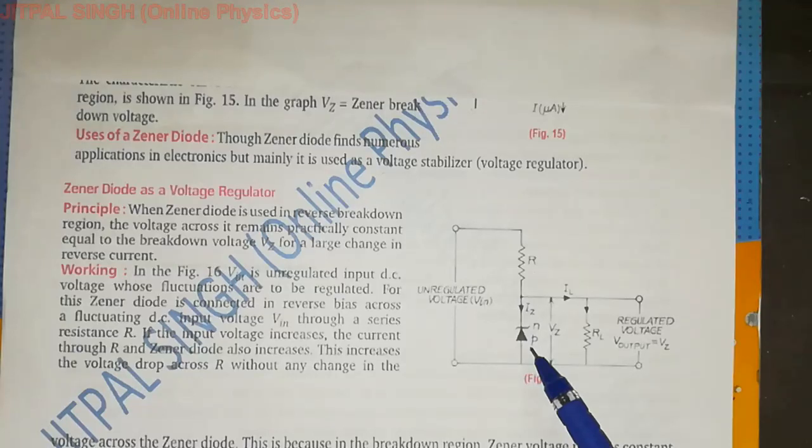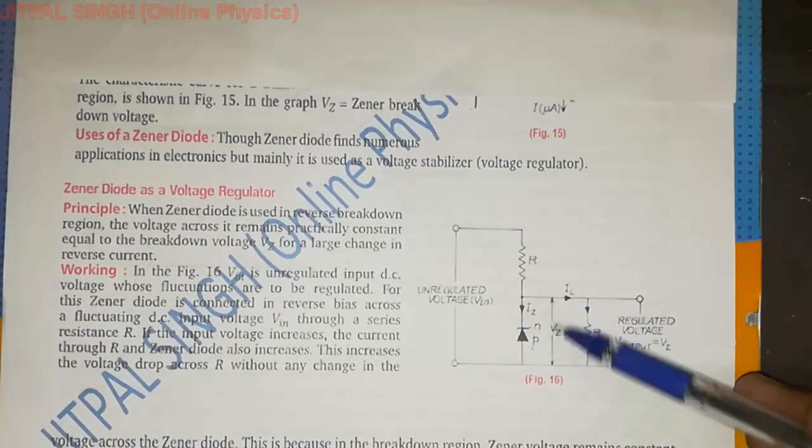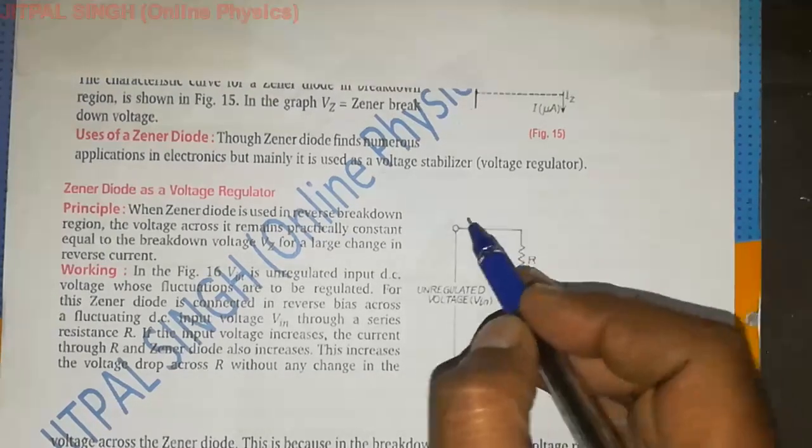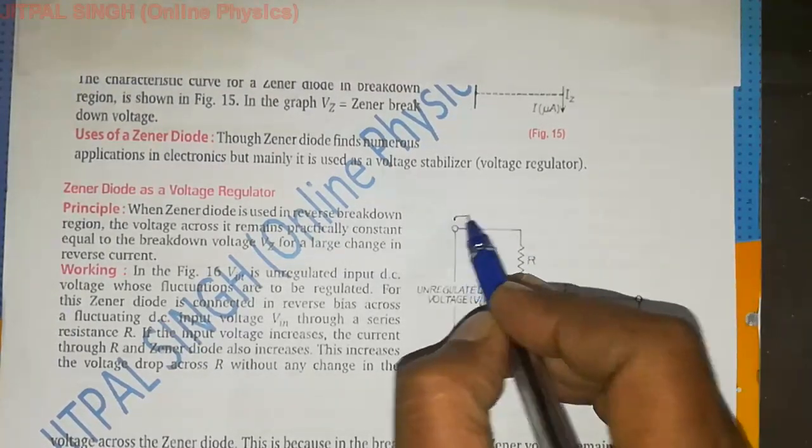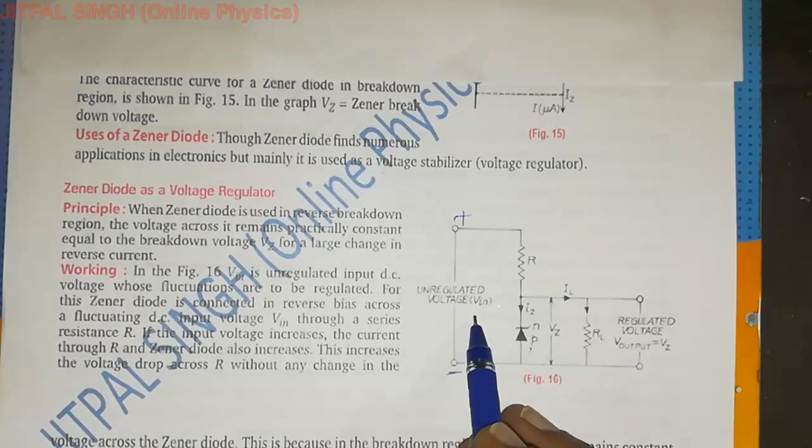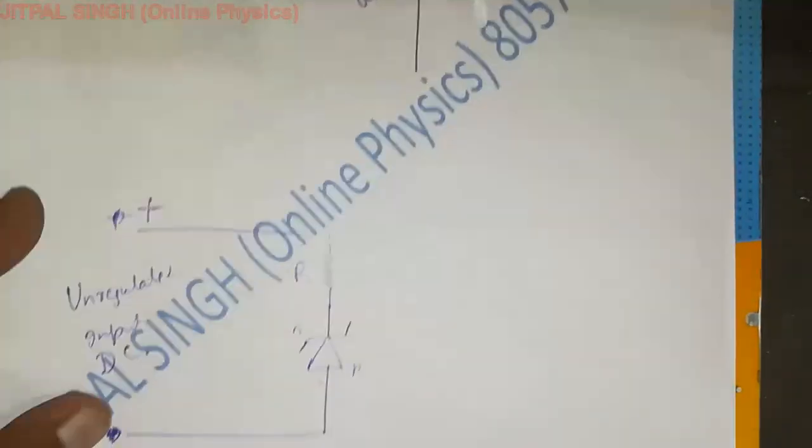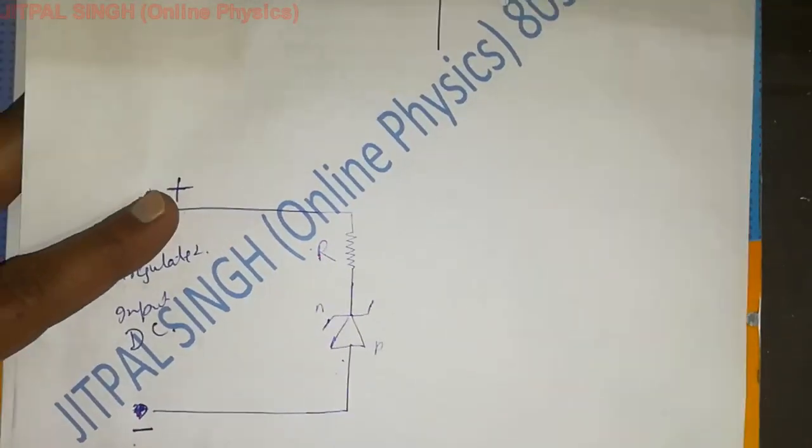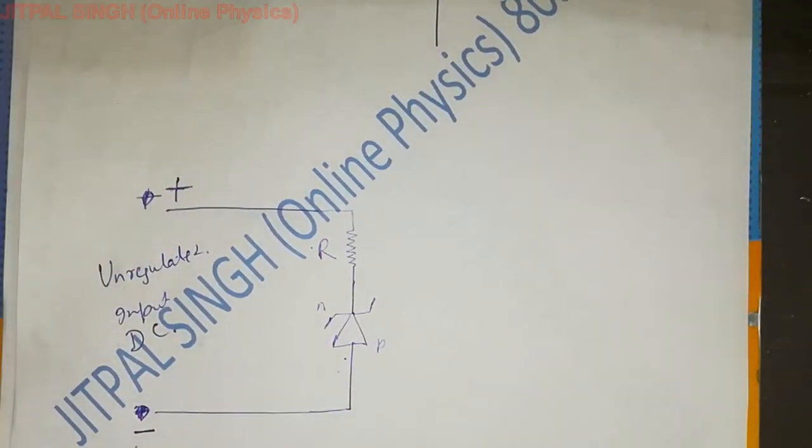Now, it is here. Look at R, Zener diode. Look at V suffix Z. This is the Zener voltage. And please take this as plus and this as minus. Unregulated voltage input. I hope this is clear.